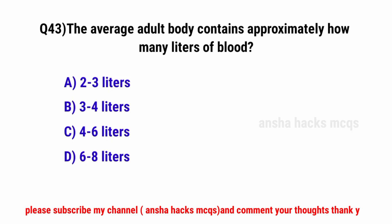Question No. 43. The average adult body contains approximately how many liters of blood? The correct option is C: 4 to 6 liters.